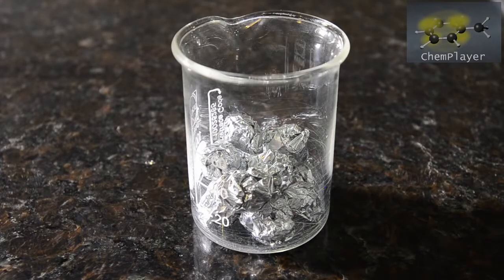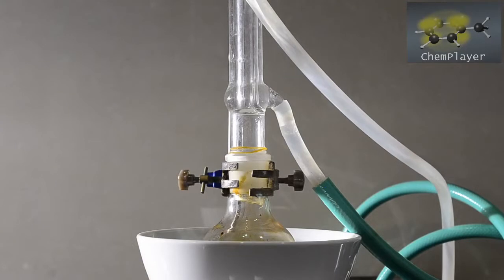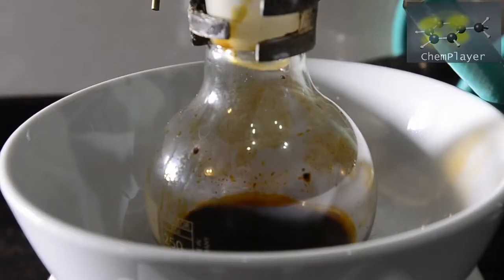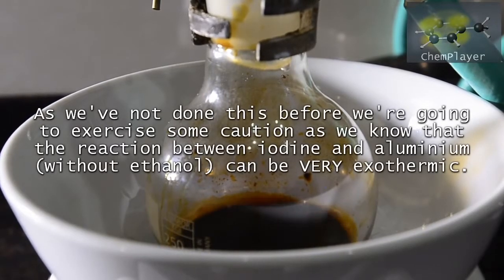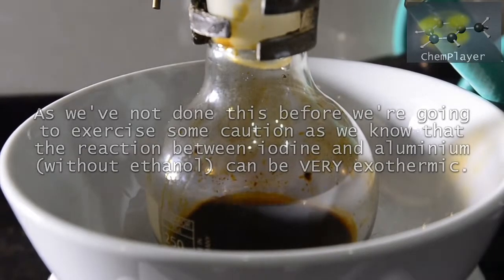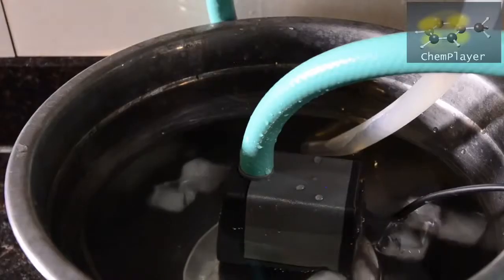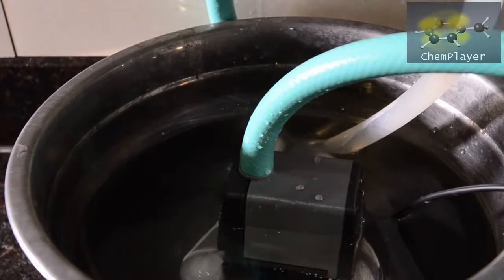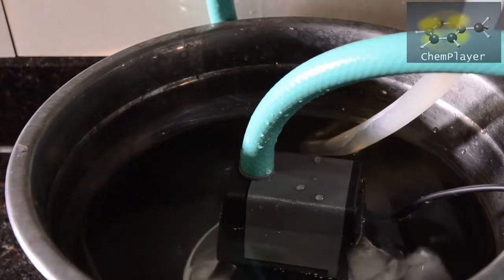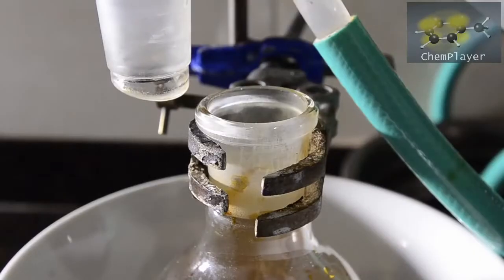Here's our setup: we've got a flask on a stirrer equipped with a Liebig condenser for refluxing and sitting in a bowl just in case we need to apply rapid cooling water. We have no idea how quickly this reaction is going to go or how vigorous it's going to be, so we want to be on the safe side. We've got ice in the cooling water because ethyl iodide is quite volatile. Let's get started.